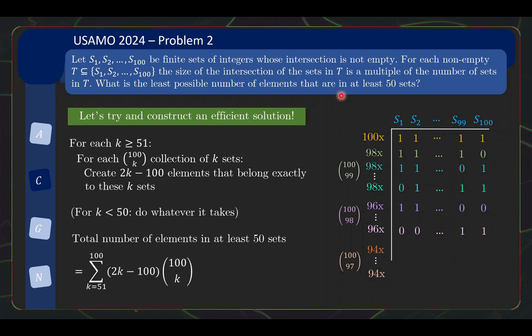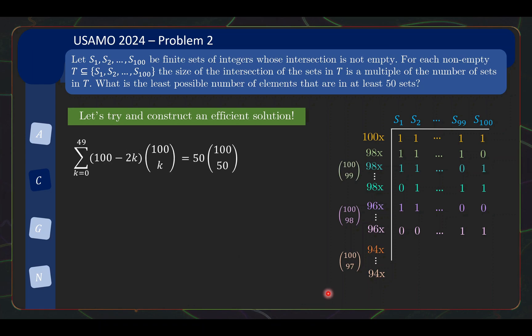Now, what is then the total number of elements in at least 50 sets in this construction? Well, it's just a simple method of summing up over the different k's. So for each k, we have 100 choose k collection. Each collection has 2k minus 100 elements, common elements. And from here, you can be satisfied that this is the answer. If you would like, you can further simplify it using some algebra. So by combinatorial identity that 100 choose k is same as 100 choose 100 minus k, you can flip the indices to become from 0 to 49. And even further, you can simplify this to a closed form expression, 50 times 100 choose 50.